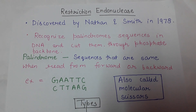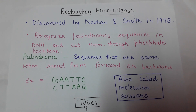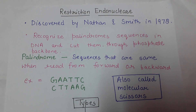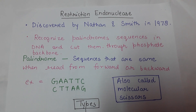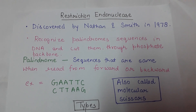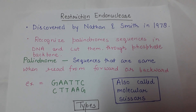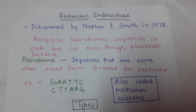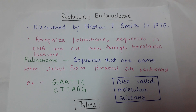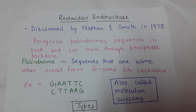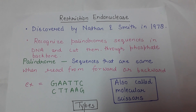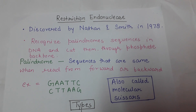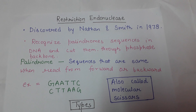Restriction endonuclease enzymes recognize specific sequences on the DNA called palindromes. Palindromes are sequences that read the same from forward or backward. For example, GAATTC — reading the top strand forward gives GAATTC, and reading the complementary strand gives GAATTC as well. These are called palindromic sequences, similar to the word 'malayalam.'